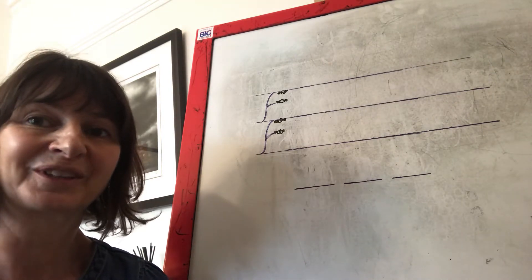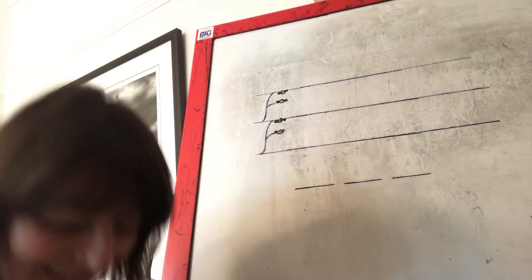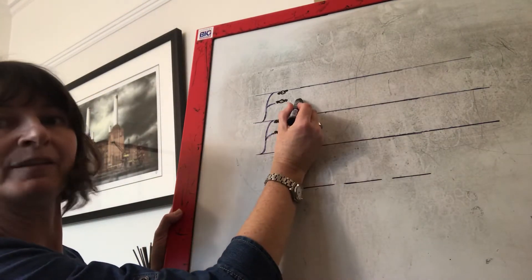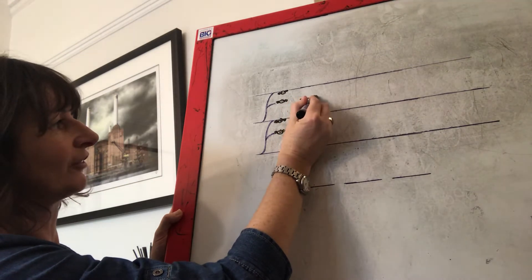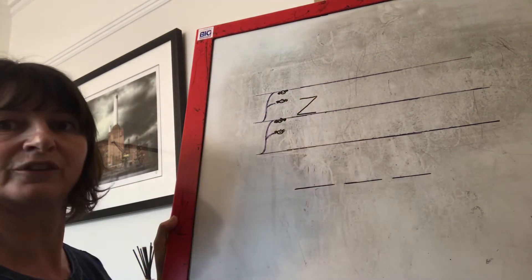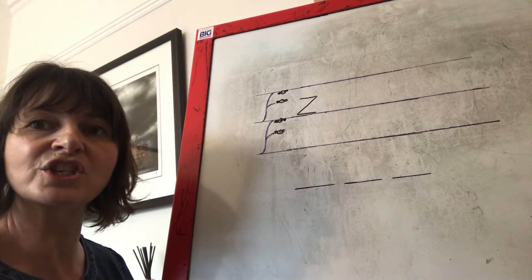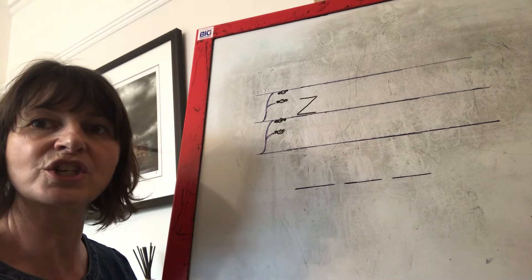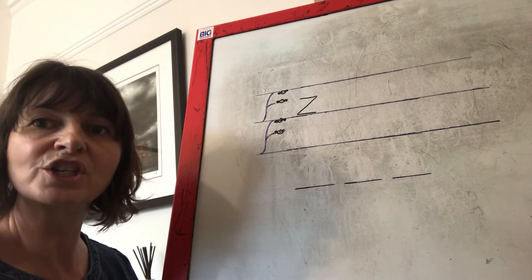Guess what? I've got a new sound for you today. Are you ready? Our new sound starts where scared monkey is. We push across, slide down and push across. The new sound is Z. It's the letter Z and it makes a Z sound. Can you say that sound? Z.